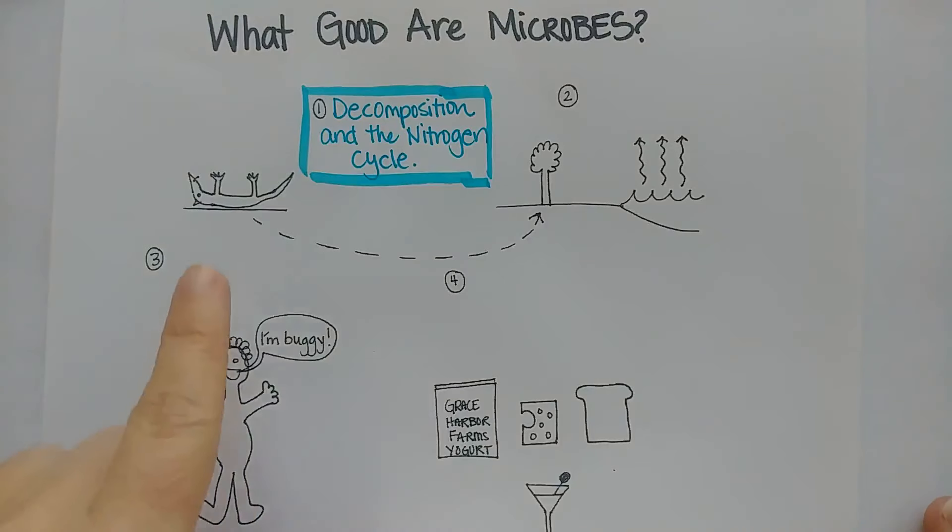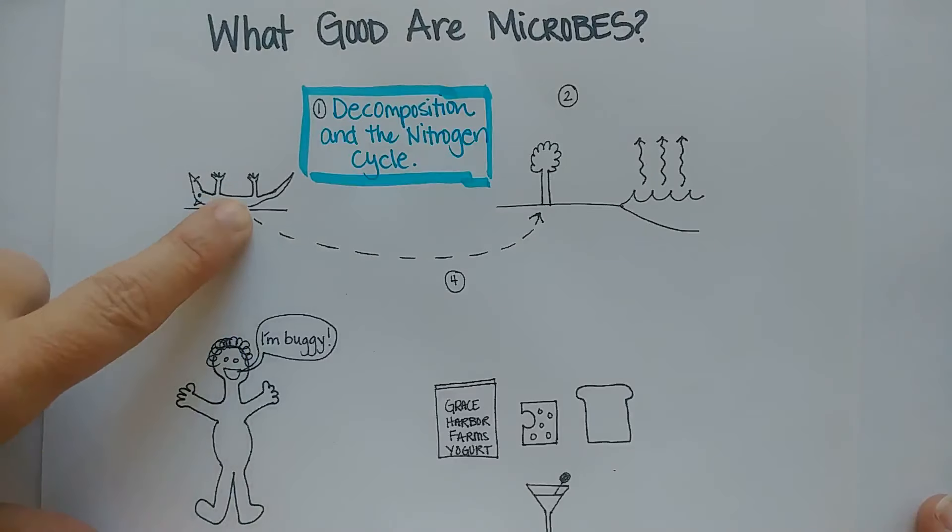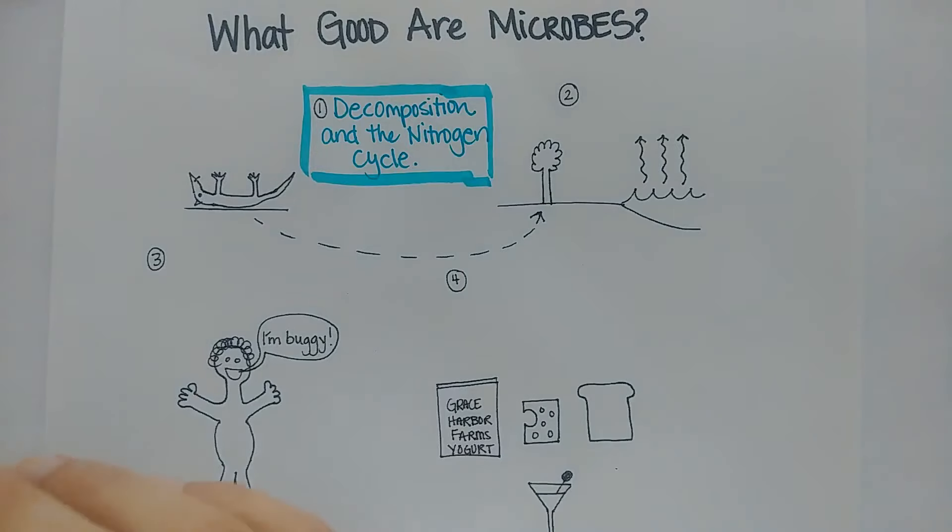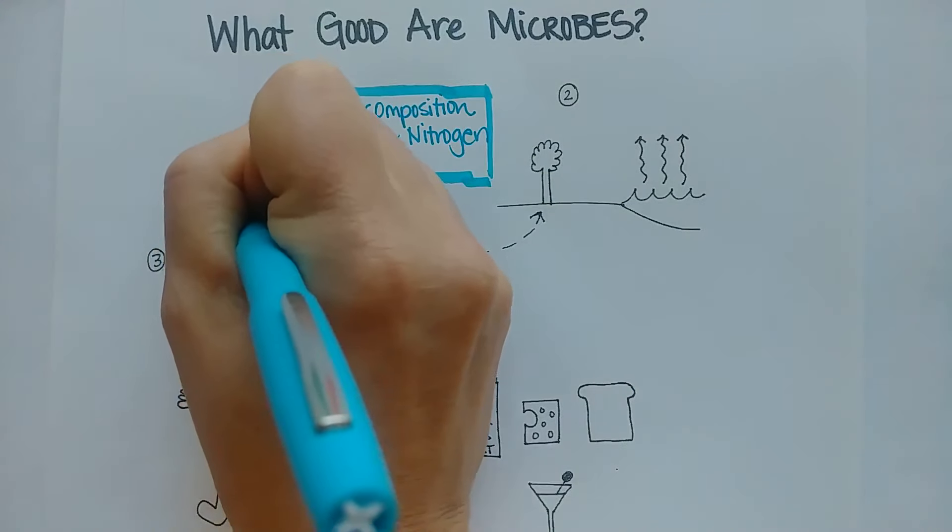So when something dies, microbes break down this organism and they make the building blocks—the amino acids become available, the fatty acids, all of that stuff. These nutrients then go into the soil, and through further changes they can become available for plants to take them up and grow. As this animal rots, the nutrients are made available for plants, and then plants will take those up for plant growth.